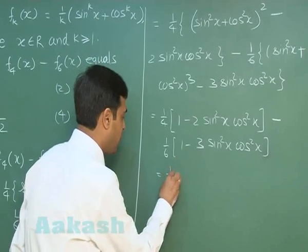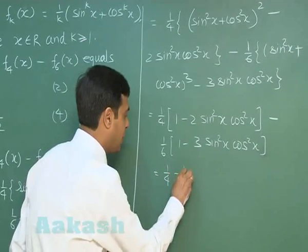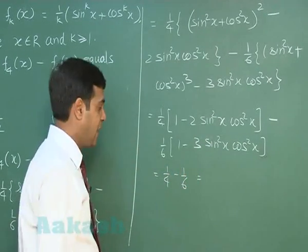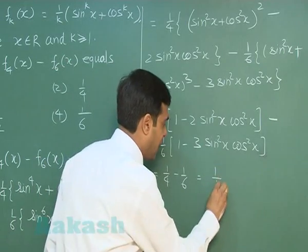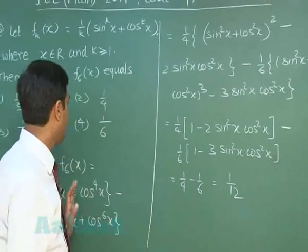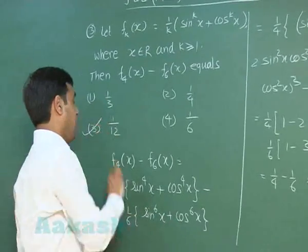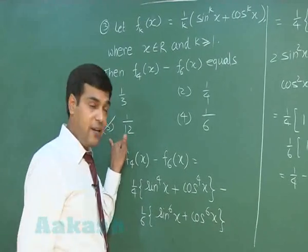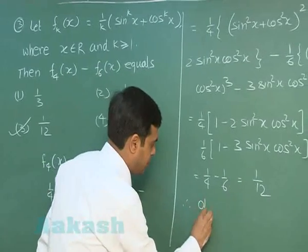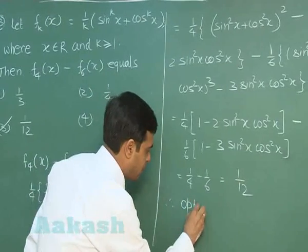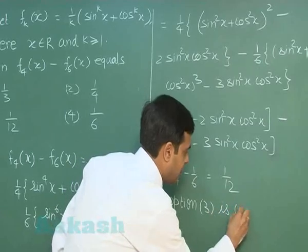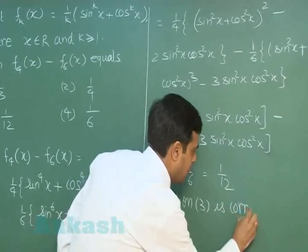After cancellation, we are left with 1/4 - 1/6. Taking LCM, the result is 1/12. Choosing from the given options, Option 3 is correct. Therefore, f_4(x) - f_6(x) = 1/12.